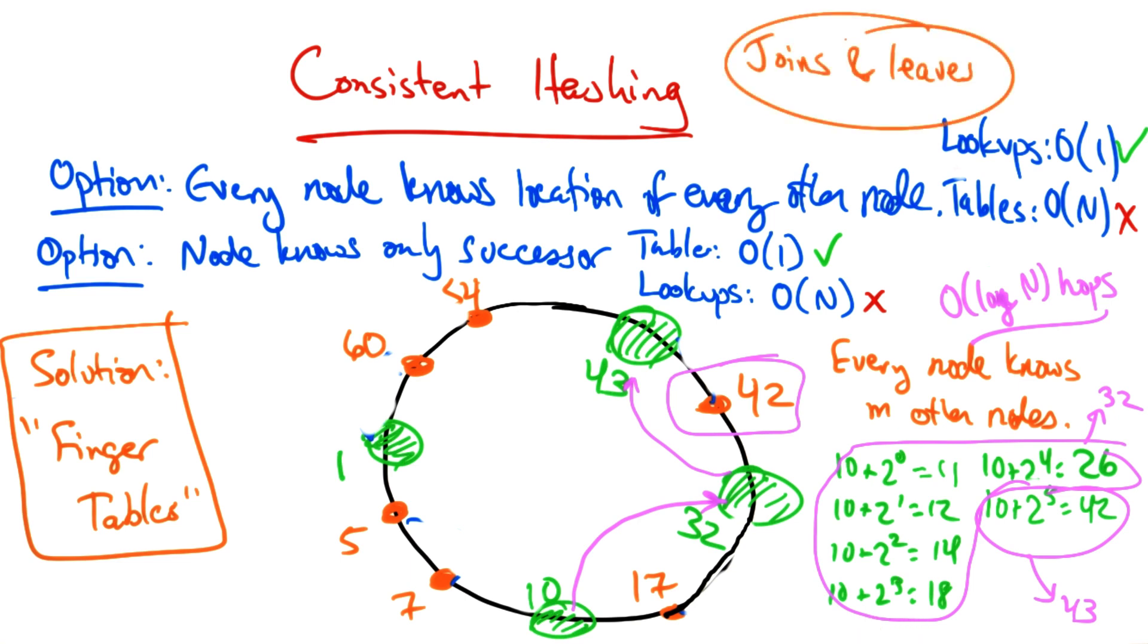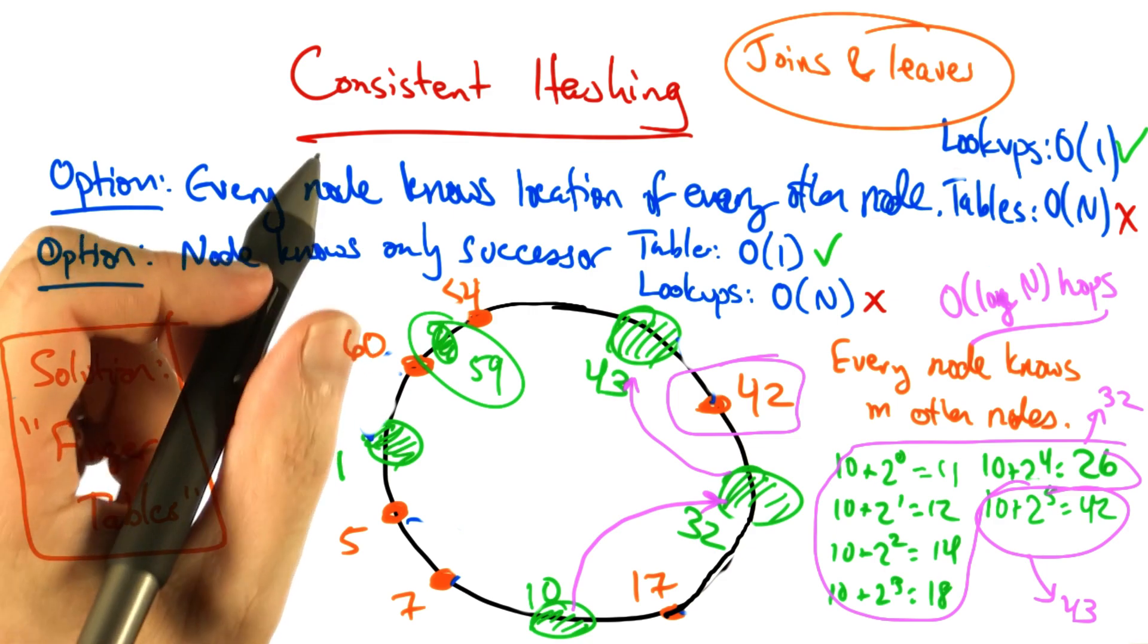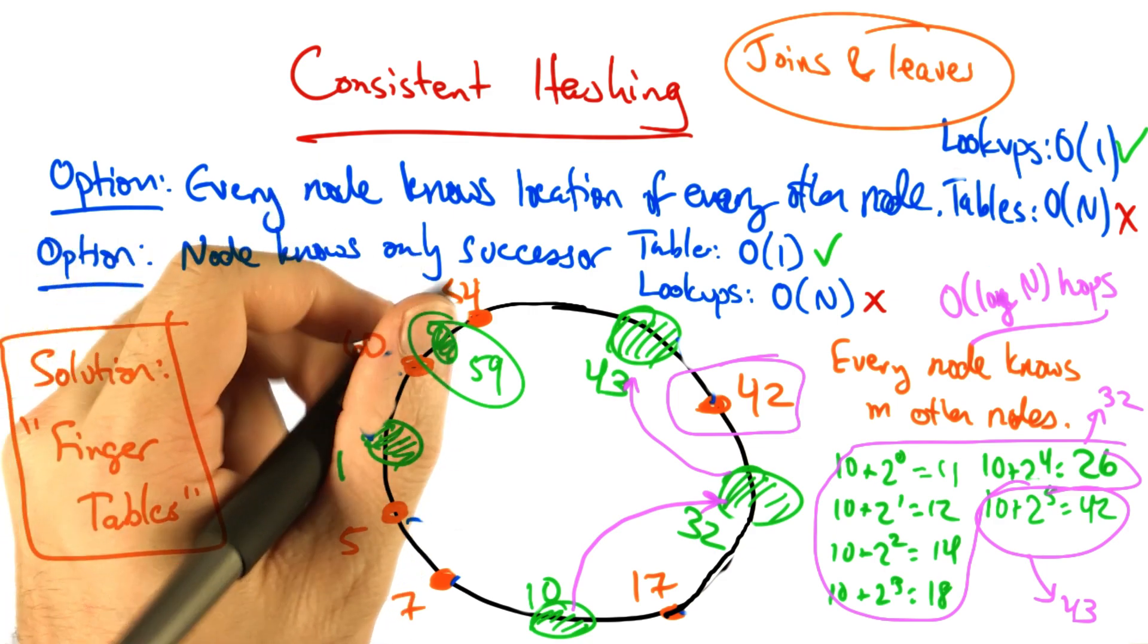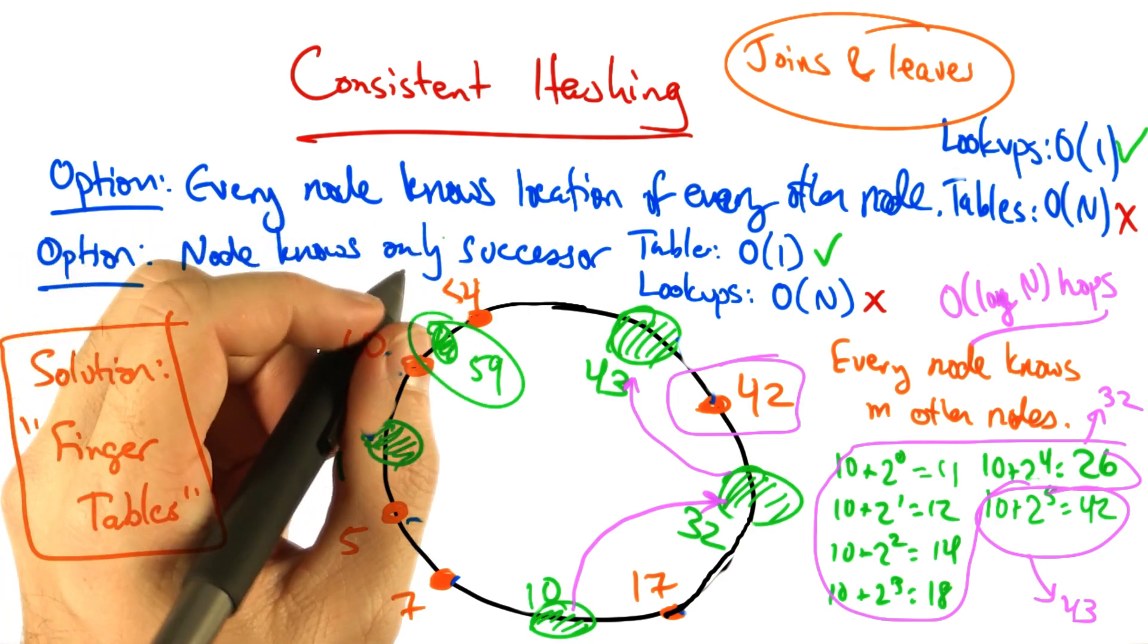Another consideration that we have to take into account is what happens when nodes join and leave the network. When a new node joins, we first have to initialize the fingers of this new node.